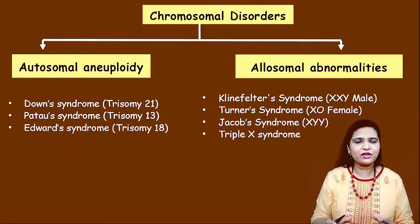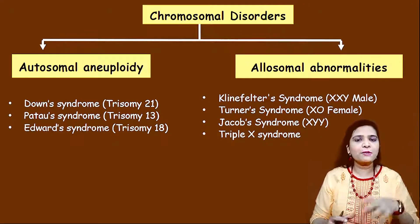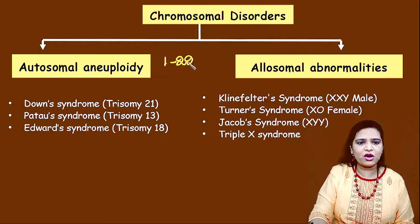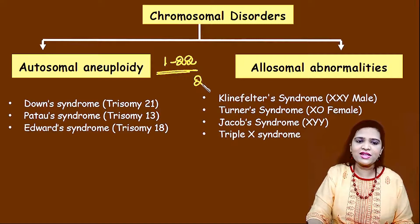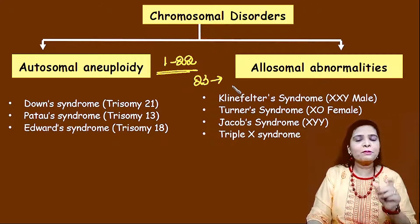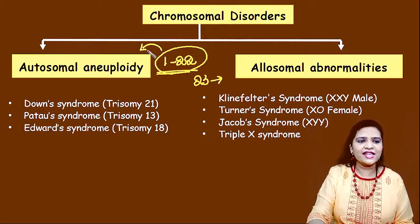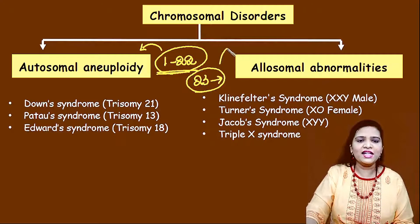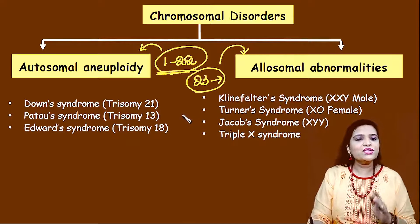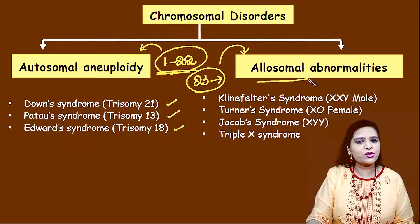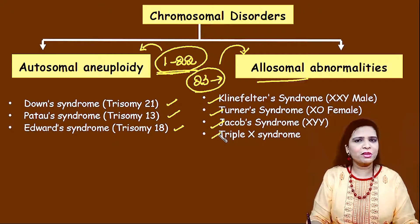Chromosomal disorders are broadly classified into two groups depending on which chromosome the abnormality occurs. The first 1 to 22 pairs are called autosomes — chromosomes responsible for body characters. The 23rd pair is called sex chromosomes or allosomes, which determine sex. If the abnormality occurs in any of the 22 autosomes, it is categorized as autosomal aneuploidy. If it occurs in the 23rd pair, it is allosomal abnormality. Autosomal examples: Down, Patau, Edwards syndromes. Allosomal examples: Klinefelter, Turner, Jacob, and XXX syndromes.